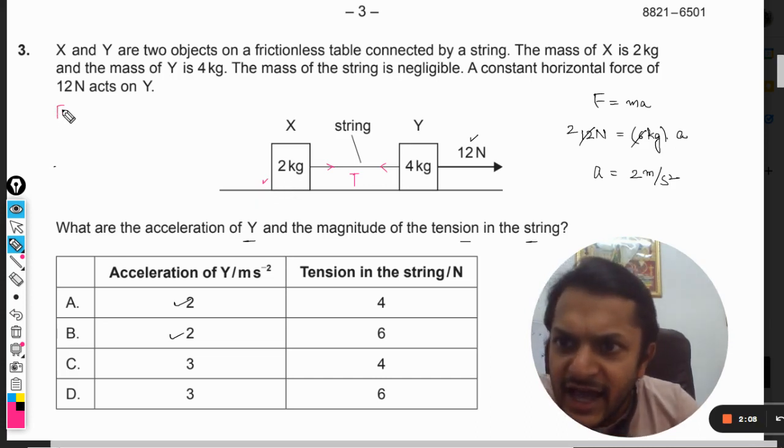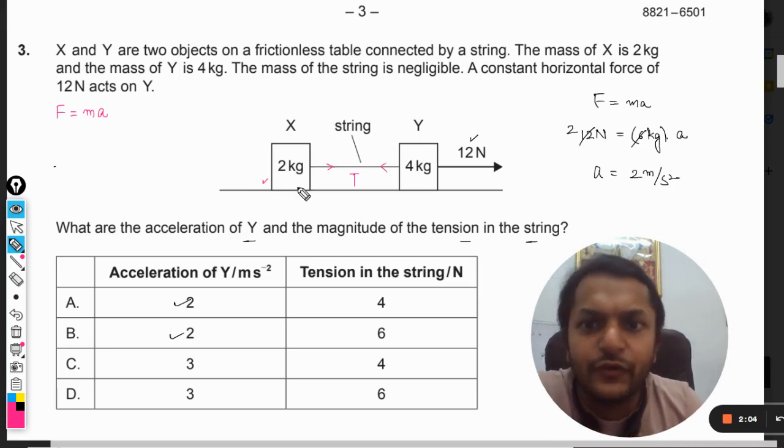So this is how we show it. From the point of view of 2 kgs, I can always say that F is equal to m into a. Now what is the total force that is acting on X? So if we draw the free body diagram here...